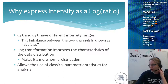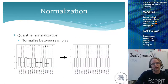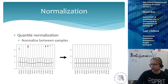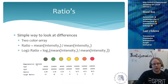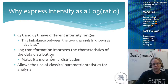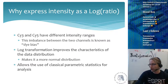For single-channel microarrays, we do the log2 transformation purely for statistical reasons — to make the distribution normal. For two-color microarrays, there is an additional reason: dye bias. If you have a single-color microarray, there is no dye bias because every array uses the same color.